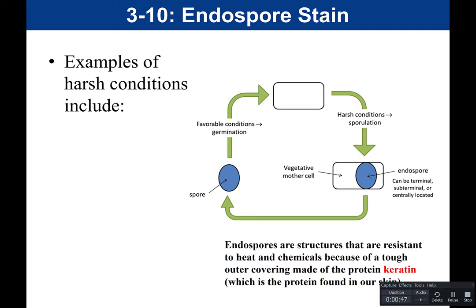An endospore is a structure whose function is to protect bacteria when conditions become harsh. What does that mean? If bacteria are growing and they come in contact with a harsh condition — it could be a change in temperature, maybe the temperature is too high, a change in pH, or dehydration meaning there's not enough water available. It could also be a response to UV exposure, because UV light causes DNA to undergo thymine-thymine dimers, which mutates DNA.